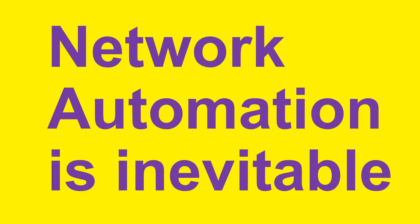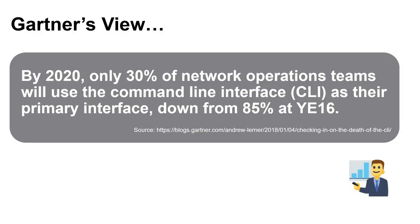Automation touches every area of society and has done for hundreds of years — from the shirt on your back, to the self-checkout at the supermarket, to the automation of driving an automobile. Personally, I don't think networking can keep holding out as a manual process forever. Gartner made this claim originally in a 2016 blog called 'The Death of the CLI.' By 2020, they predicted only 30% of network operations teams would use the CLI as their primary interface, down from 85% in 2016, because there would be new products and new ways to manage the network.